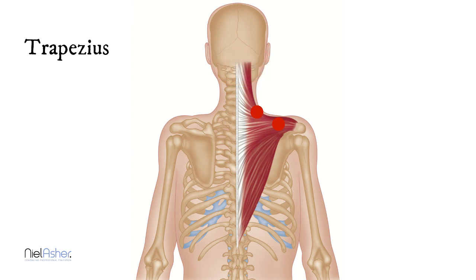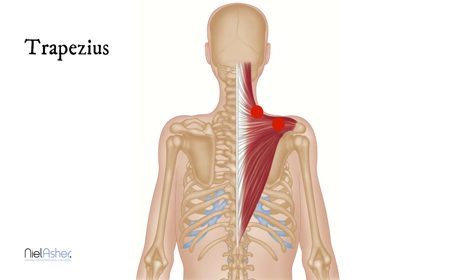People who present with pain arising from the base of the skull and running across the head represent a very common presentation, and there are a number of different possible diagnoses. You must always remember that trigger points are only one of them. Common alternative diagnoses include tension headaches and atypical facial neuralgia.